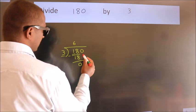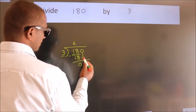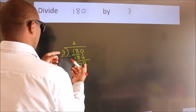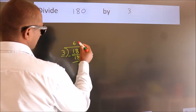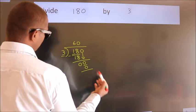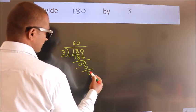After this, bring down the next number. So, 0 down. When do we get 0? In the 3 table, 3 times 0 is 0. Now we subtract. We get 0.